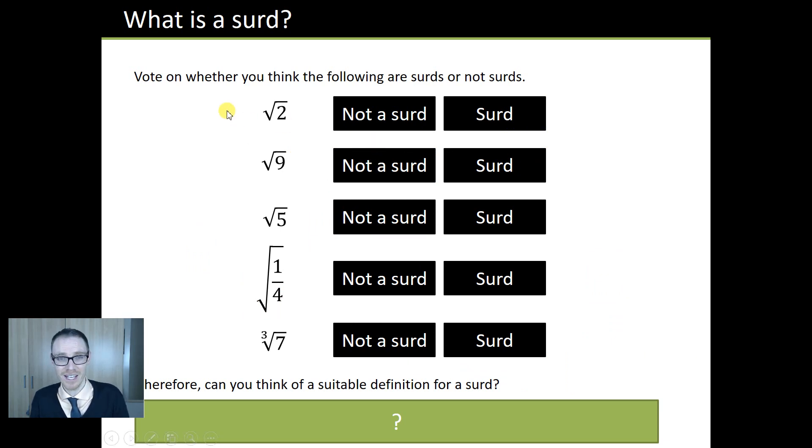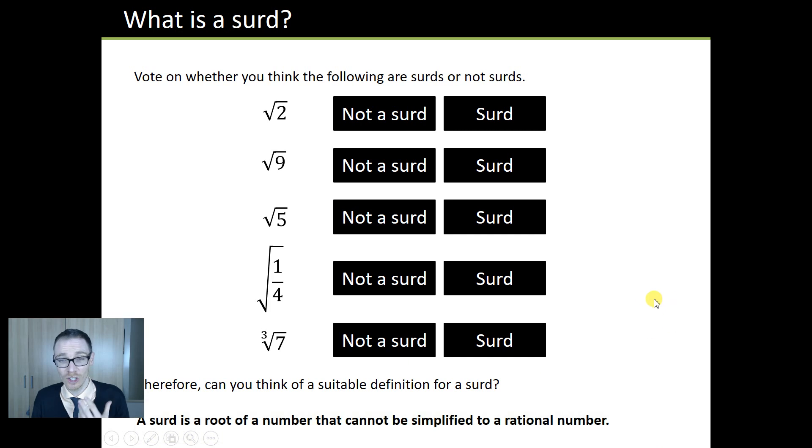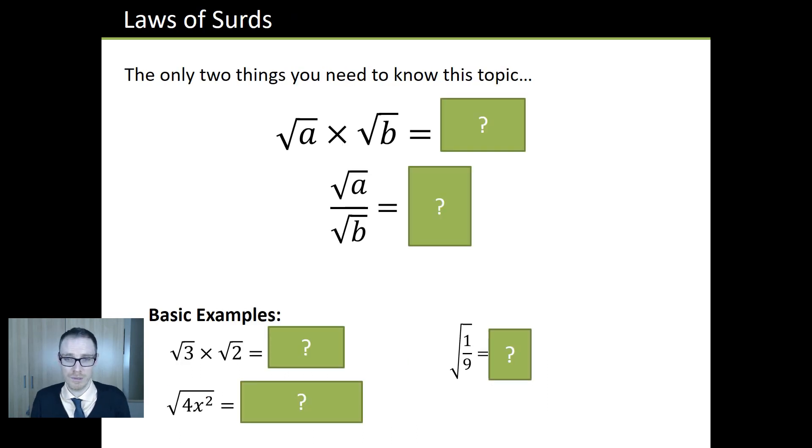And so once we've got that, a little bit of class voting, which of these is a surd, which isn't a surd and so on. And then, therefore, what's your definition of a surd? And I love that. It's not saying to the kids, this is a surd, write this rule down. It's all right, if that's a surd and that's not a surd and that's a surd and that's not a surd, what's your definition of one and so on? Lovely.